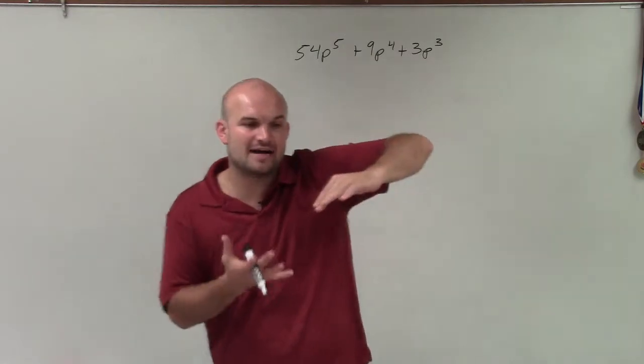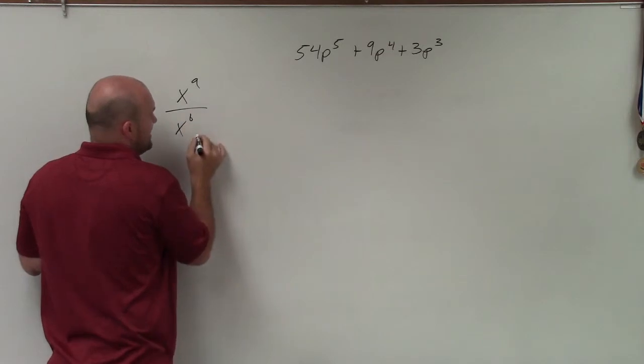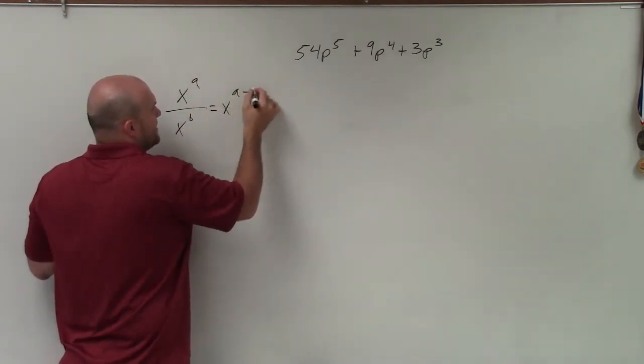And remember, they can be divided because when I have an exponent, let's just say x to the a divided by x to the b, it can evenly divide into it as long as I can take a minus b, right?